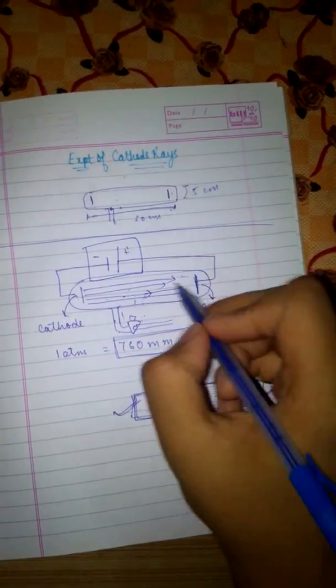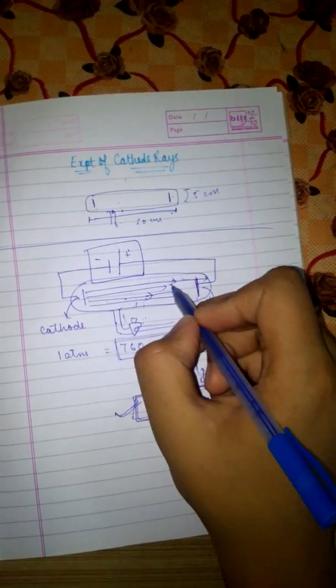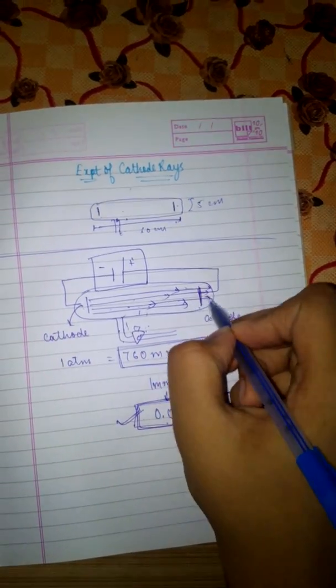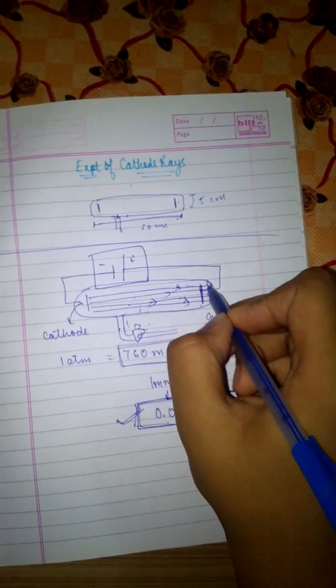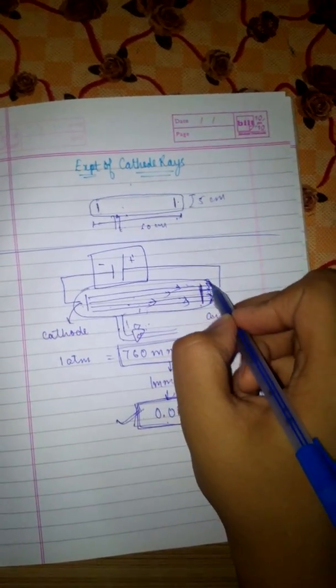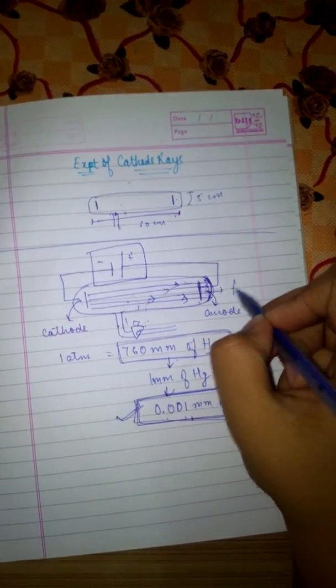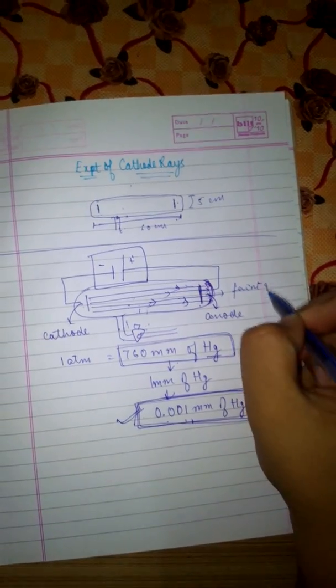As soon as these cathode rays strike the discharge tubes, they produced a faint green fluorescence - a faint green shine was there on this side.